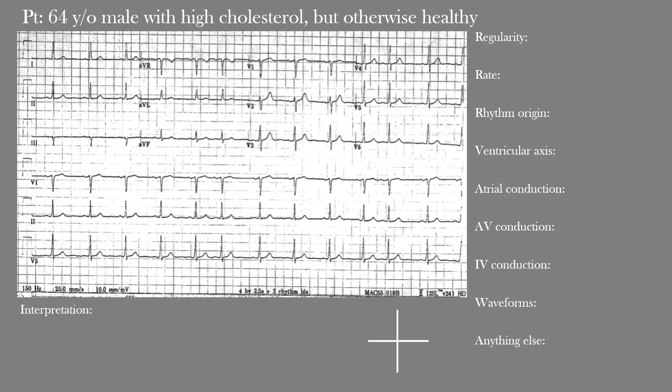Before we get started, let's review our approach that we've been using to interpret EKGs. We have the patient's clinical presentation above, and below it we have his EKG. On the right side you can see the list of areas we're going to go through. First is regularity — whether the rhythm is regular or irregular, and if irregular, whether it's regularly irregular or irregularly irregular. Next we have the heart rate, and then we'll look at the rhythm origin.